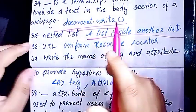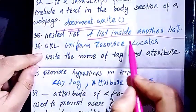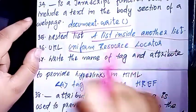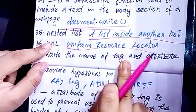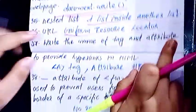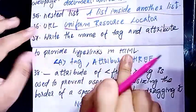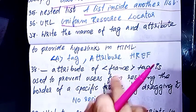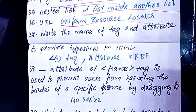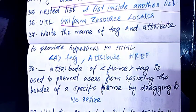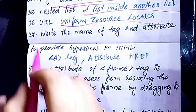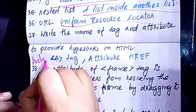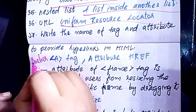URL is Uniform Resource Locator. To provide a hyperlink in HTML, write the name of the tag and attribute. You can use the anchor tag. The anchor tag is used for hyperlinks.